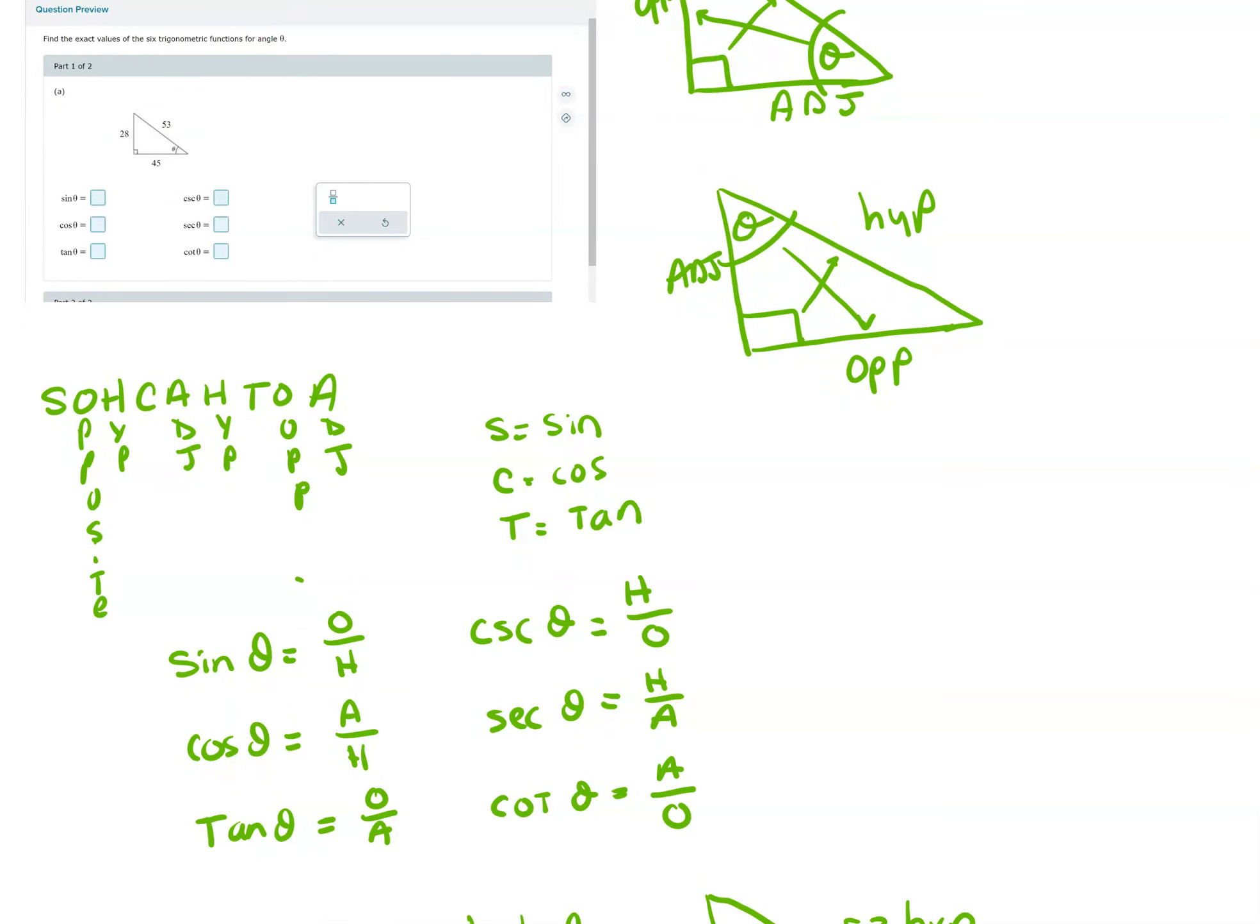The next thing is the sine, cosine, tangent. So S is for sine, C is for cosine, T is for tangent. So SOHCAHTOA, the O is opposite side, H is hypotenuse, A is adjacent, H is hypotenuse, O is opposite, A is adjacent.